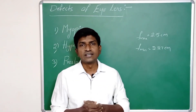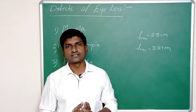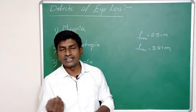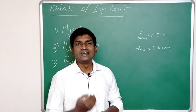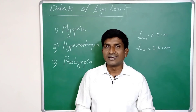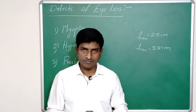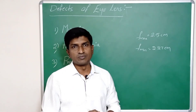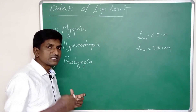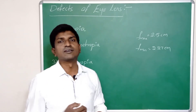Presbyopia is a problem mainly seen in aged persons. As the age of a person increases, the flexibility of ciliary muscles decreases. Due to this decrease in flexibility, the person faces both myopia and hypermetropia at the same time. In this situation the person cannot see nearer objects clearly as well as farther objects.